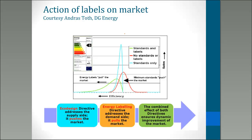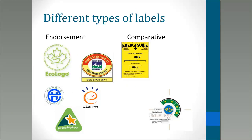Labels are a way of distinguishing energy performance, so there's an incentive for manufacturers to innovate and make better products, and consumers can see what they're getting and choose to buy something more efficient. That's the basic principle. Generally, there are two types of labels: endorsement labels, which are almost always voluntary, and very simple visually — an endorsement label is either there or it's not, so if it has the logo, it's meeting some specification.